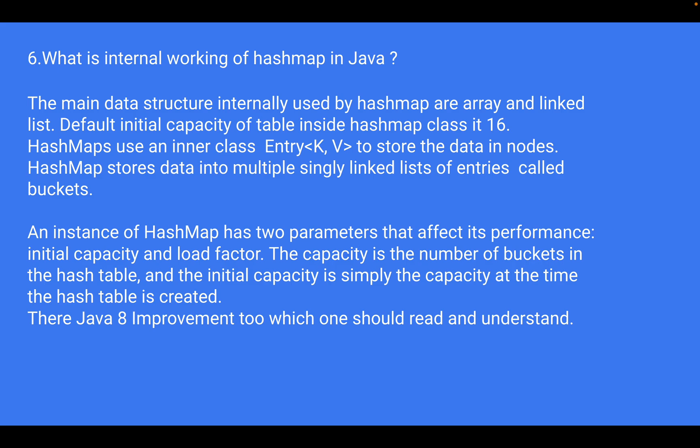Another common question is: what is the internal working of HashMap in Java? The main data structures internally used by HashMap are an array and a linked list. The internal working involves how it stores and retrieves key-value pairs and handles collisions. I would suggest exploring the answer to this question on your own to understand it better.